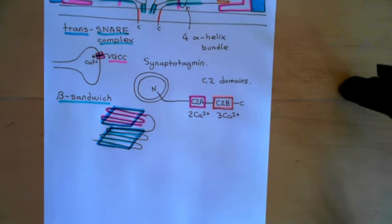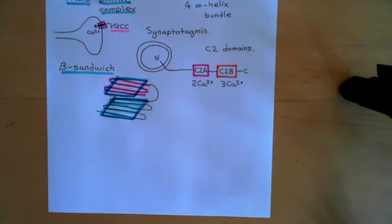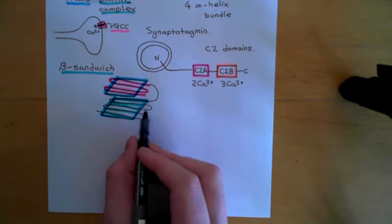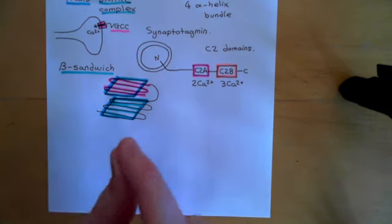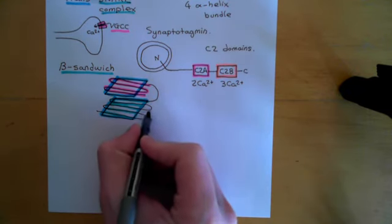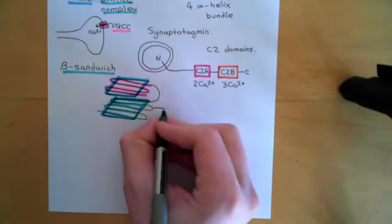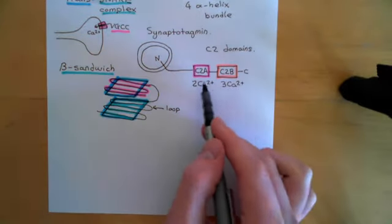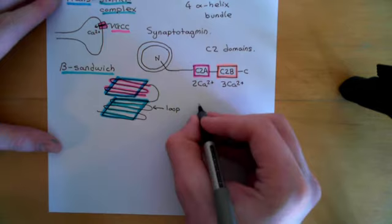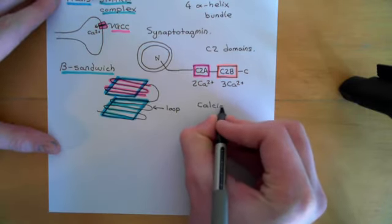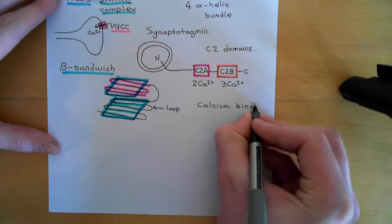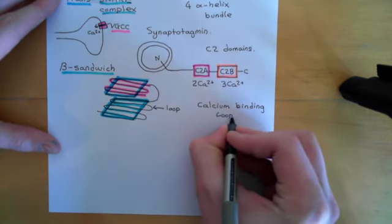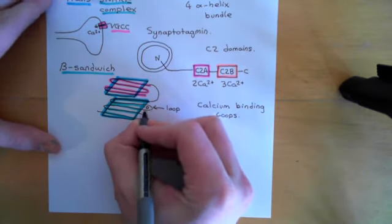How can this sort of structure bind calcium? Because that's why C2 domains are really important in calcium signalling. The calcium ions bind to these loops in between the beta strands which make up the beta sheets. Some of these loops are capable of binding calcium ions in these C2A and C2B domains, and those specific loops capable of binding to calcium ions are known as calcium binding loops.